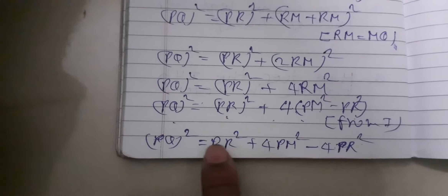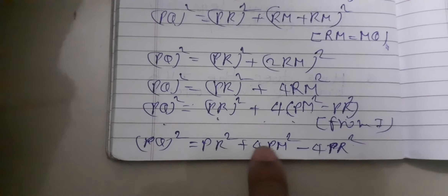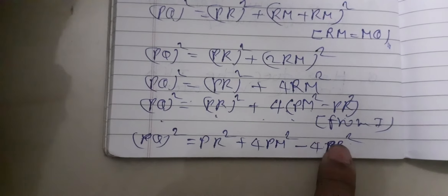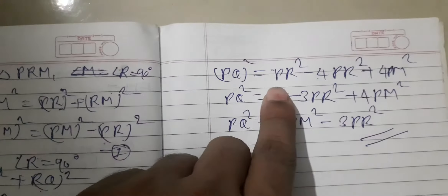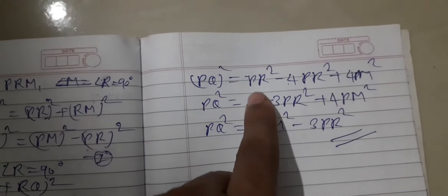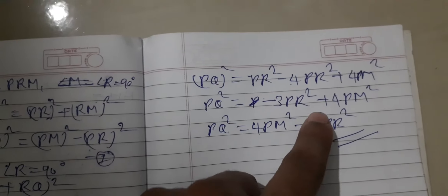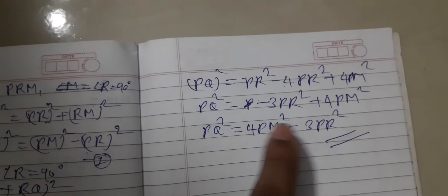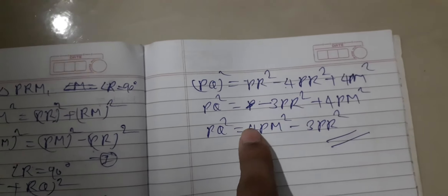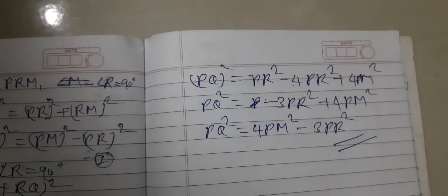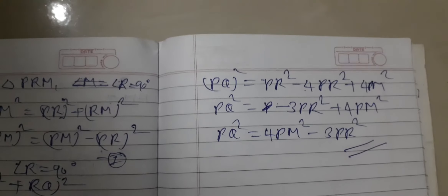So PR square and minus 4PR square gives minus 3PR square, plus 4PM square. Therefore PQ square is equal to 4PM square minus 3PR square. It is proved. Next question.